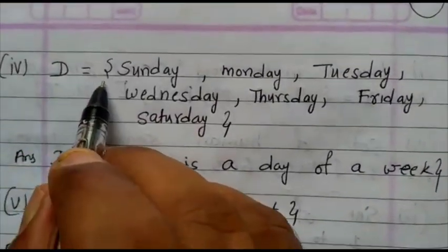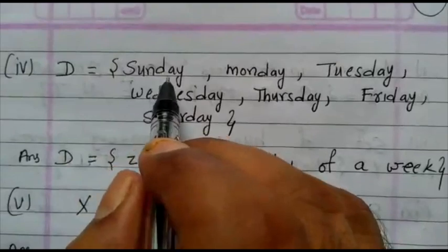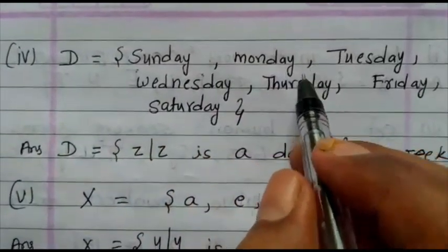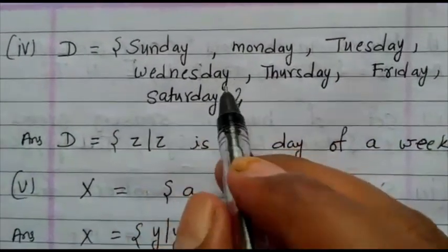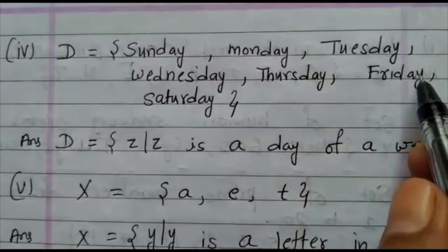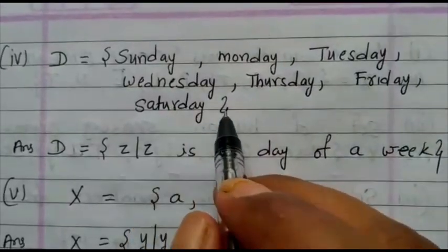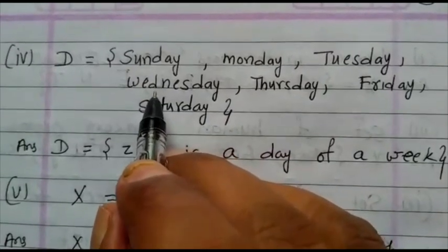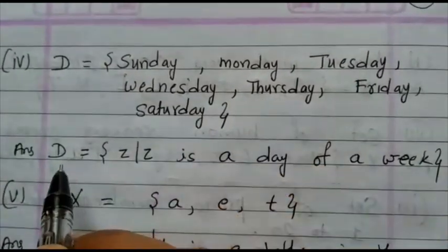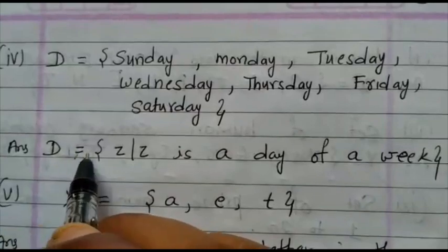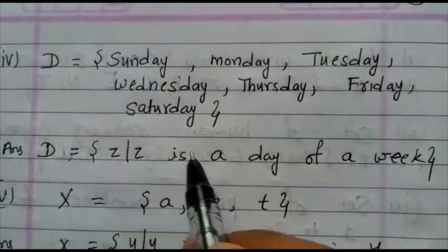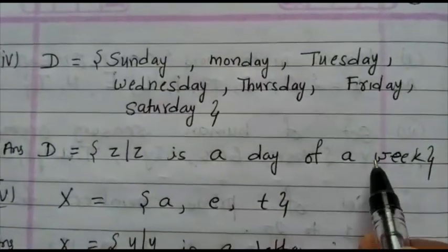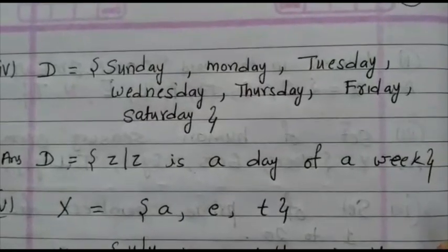Next question. D equals, curly bracket, Sunday, Monday, comma, Tuesday, comma, Wednesday, comma, Thursday, comma, Friday, Saturday. What are you looking here? That is a week of days. How to write? Set D equals z of z is a day of a week, and close the bracket.